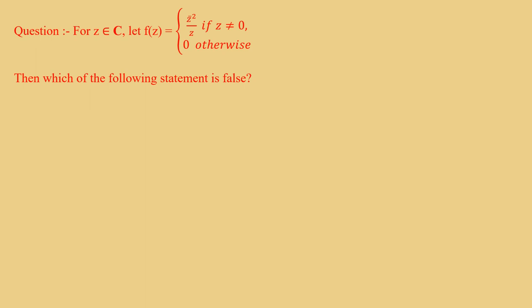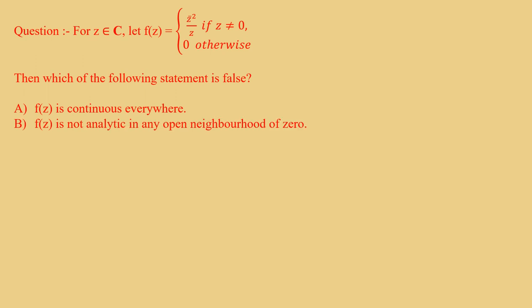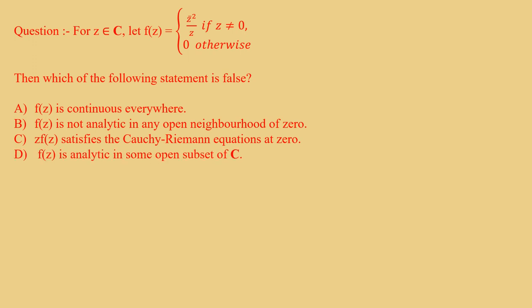The question is: for Z belonging to ℂ, let F(z) = z̄² / z if z ≠ 0, and 0 otherwise. Then which of the following statements is false? Option A: F(z) is continuous everywhere. Option B: F(z) is not analytic in any open neighborhood of 0. Option C: z·F(z) satisfies the Cauchy-Riemann equations at 0. Option D: F(z) is analytic in some open subset of ℂ.